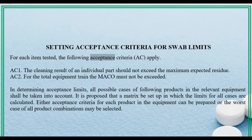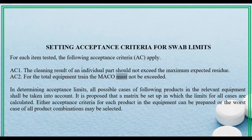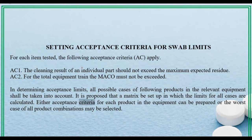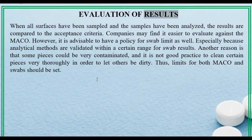Setting acceptance criteria for swab limits: for each item tested, the following acceptance criteria apply. AC1: the cleaning result of an individual part should not exceed the maximum expected residue. AC2: for the total equipment train, the MACO must not be exceeded. In determining acceptance limits, all possible cases of following products in the relevant equipment shall be taken into account. It is proposed that a matrix be set up in which the limits for all cases are calculated, either acceptance criteria for each product in the equipment can be prepared, or the worst case of all product combinations may be selected.